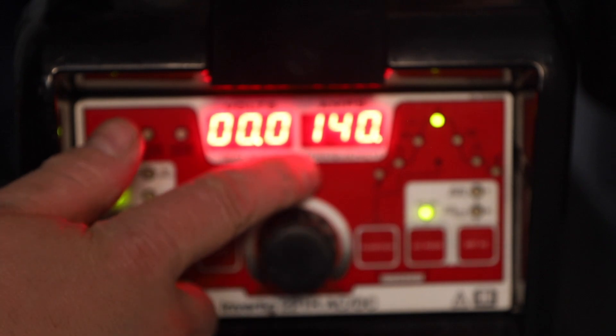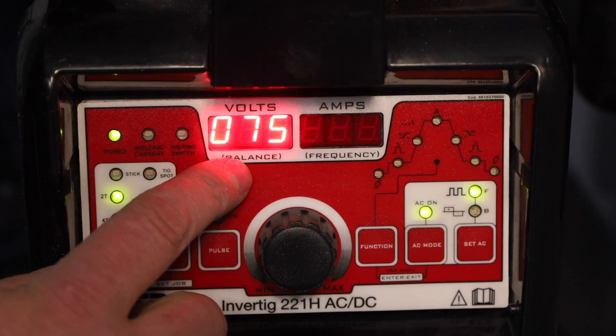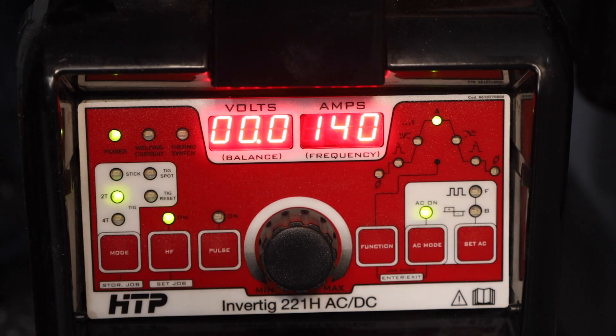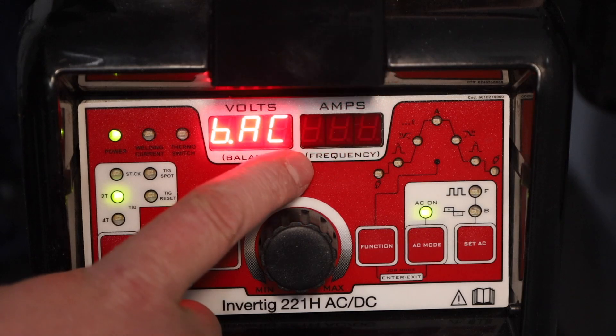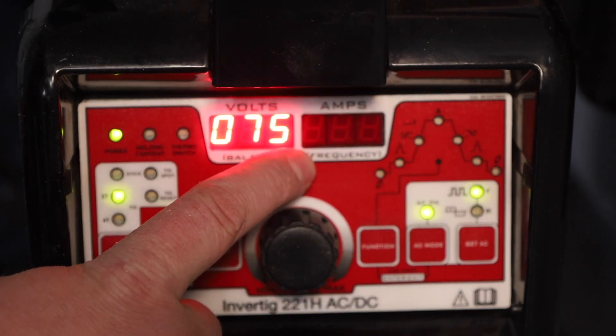Now, as far as the AC settings, we are running that 140 amps, and I have it set to 75% electrode negative on my balance. That's going to work really well because this is pretty clean material, and I've set the frequency to 80 hertz, which works pretty well for this thickness of material. I'd run a higher frequency for thinner material and a lower frequency for thicker material.